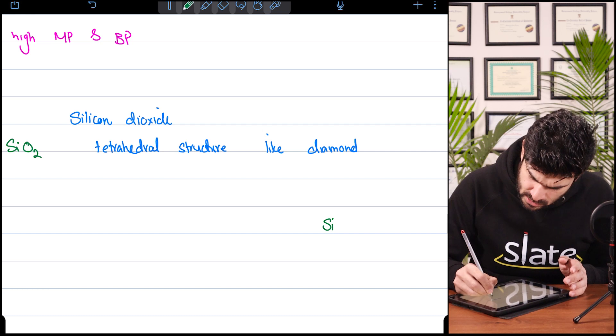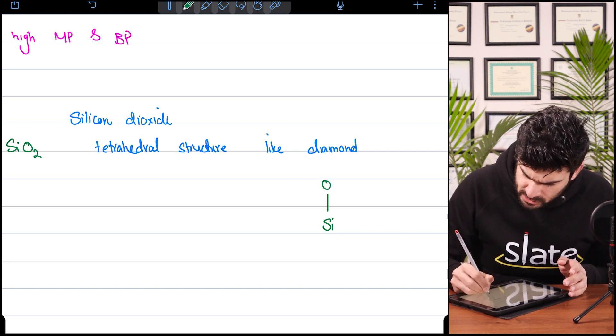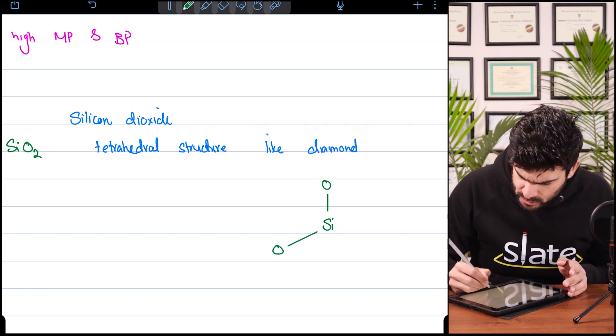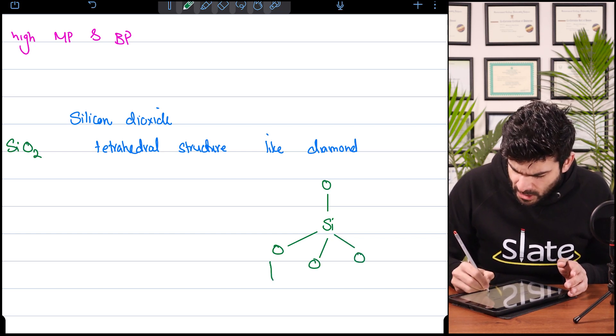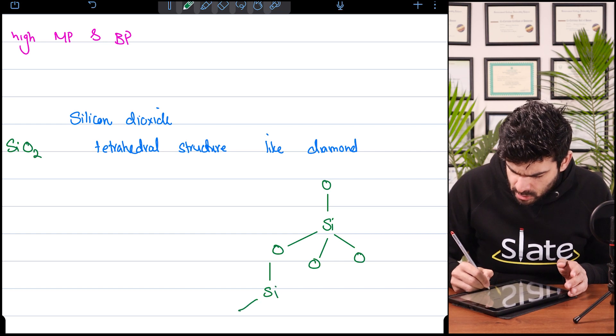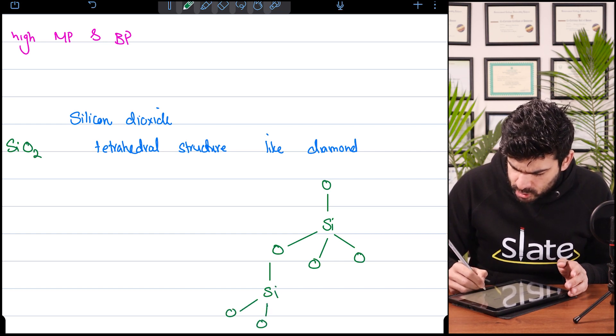Silicon makes four bonds. Silicon is bonded with one oxygen, second oxygen, third oxygen, four oxygen. Goes down. Silicon, one oxygen, two oxygen, three.